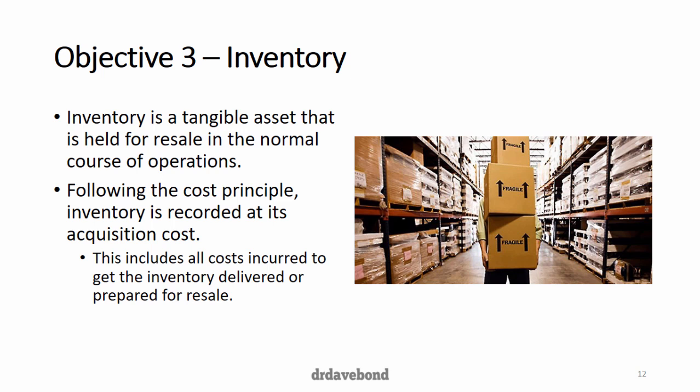Turning now to inventory. Inventory is a tangible asset held for resale in the normal course of operations. Pretty much any asset can be sold, but the key idea is that these particular items are being bought with the intention of reselling them. So office equipment like pens and stationery would be supplies for most companies, but for a company like Officeworks or Staples who buy these things to sell them, they are inventory.